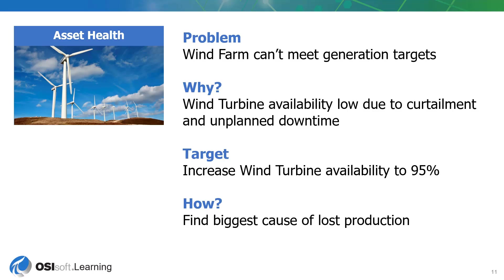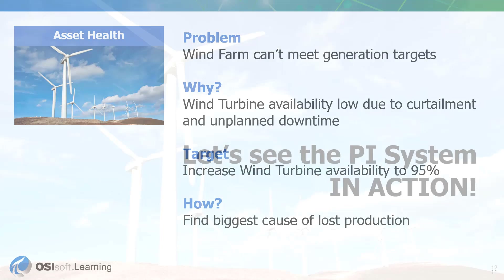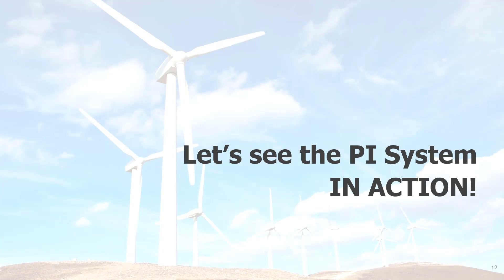In this particular use case, we have a wind farm that can't meet their generation target. The wind turbine availability is low due to curtailment and unplanned downtime. Our target given to us by the executive team is to increase wind turbine availability to 95%. We aim to achieve this by finding the biggest cause of lost production. Let's take a look at the PI System in action and see how we can use some of our tools like PI Vision to see what's going on in our operations.